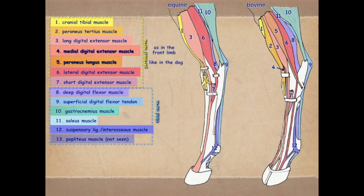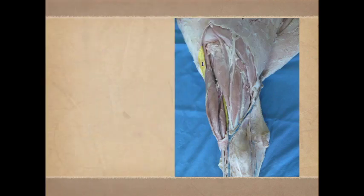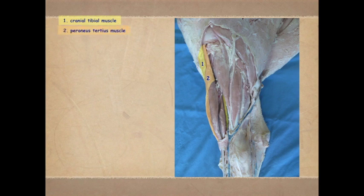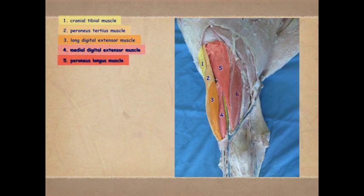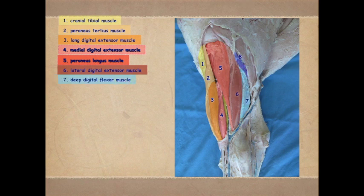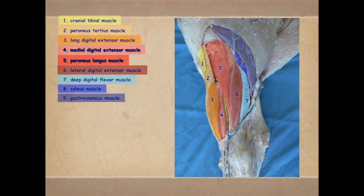Looking at a specimen of the bovine: number one is the cranial tibial muscle. Number two, which has been reflected, is the peroneus tertius — reflected so we can see the long and medial digital extensor muscles underneath. We also see the peroneus longus, which is not present in the equine. Then the lateral digital extensor, the deep digital flexor, the soleus, and the gastrocnemius muscle.